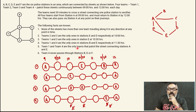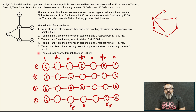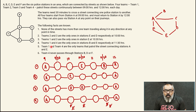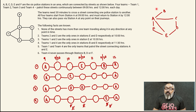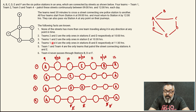Teams 1 and 4 are the only ones that patrol the street connecting station A and E. Team 4 never passes through stations B, D or F. When you look at constraints 5 and 6, what is fascinating is that the A-E line is not available for teams 2 and 3. And for team 4, since B, D and F are not available, team 4 only sees a slightly different diagram — teams 2 and 3 also have a slightly different story.